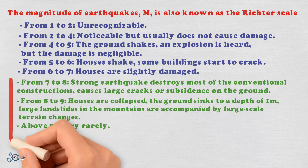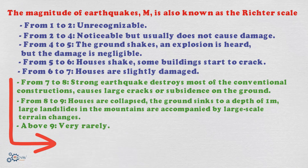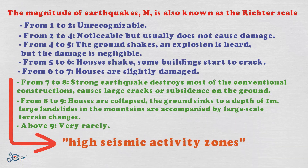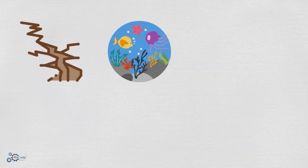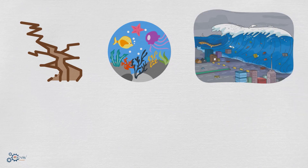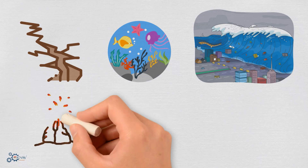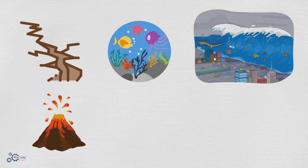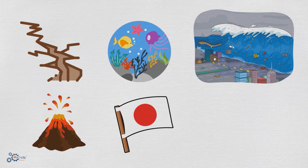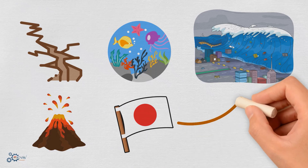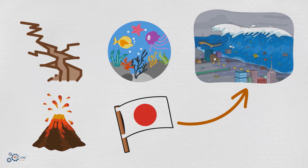Earthquakes with magnitude greater than 7 do not occur everywhere but often concentrate in certain areas called high seismic activity zones. Earthquakes that occur on a seabed can cause landslides or deformation of the seafloor, giving rise to tsunamis — large waves that travel the oceans and then make landfall. Sometimes earthquakes even activate volcanoes, even those that have been inactive for a long time. Japan is one of the countries where earthquakes are frequent with different magnitudes, causing significant damage to people and property.